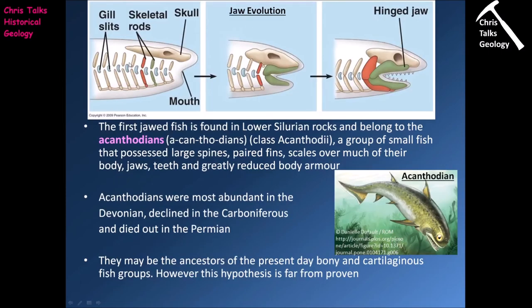Looking at this diagram, here is one of our jawless fish with the gill arches supporting the gills and keeping the mouth open. Over time these gill arches became more developed — the first two disappear, the third one develops into the upper and lower jaw, and the fourth also develops into the lower jaw and part of the upper jaw and skull. This is a case of evolutionary repurposing — taking an existing structure and turning it into something for a new use.